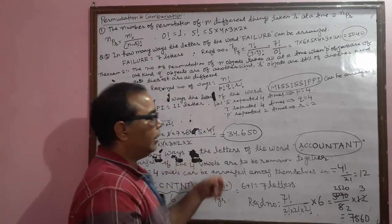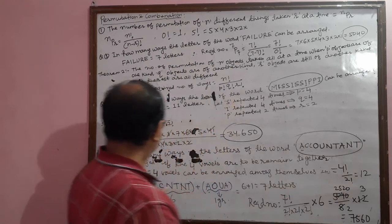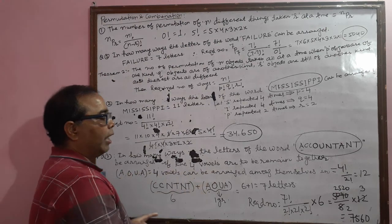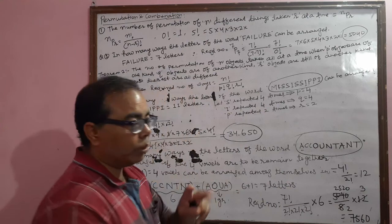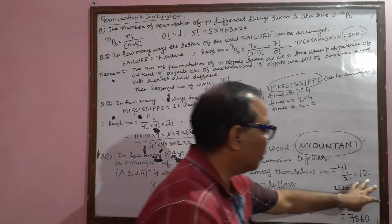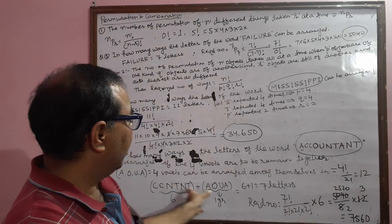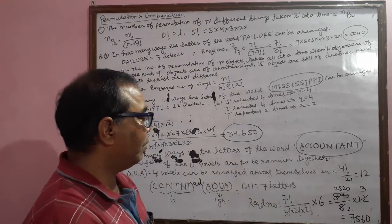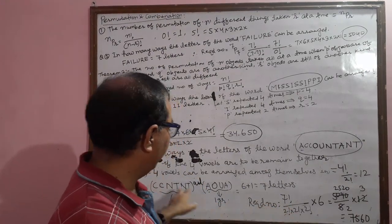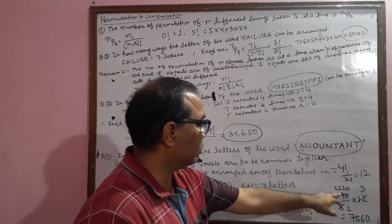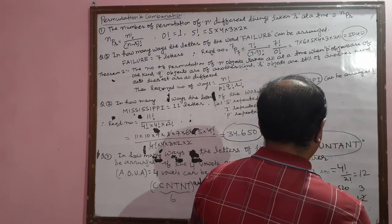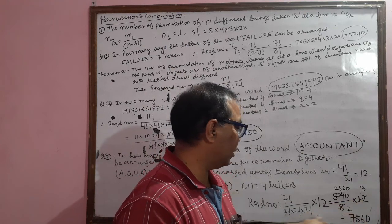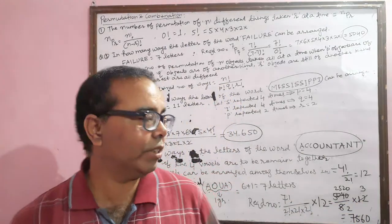The four vowels A, O, U, A can also arrange among themselves in four factorial ways, but since A is repeated two times, we divide by 2 factorial. So the vowels arrange in 4 factorial divided by 2 factorial = 12 ways. The total required number = seven factorial divided by (2 times 2 times 2) multiplied by 12, which gives 75,600.